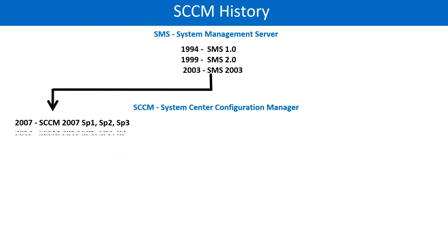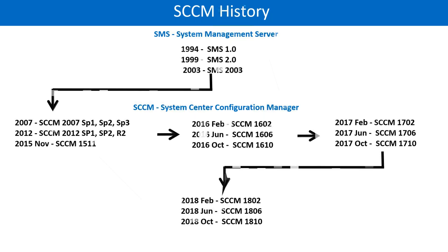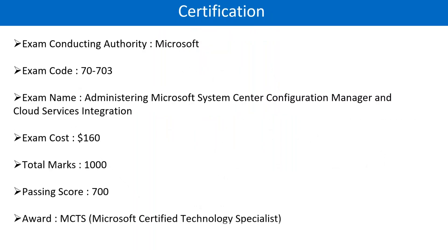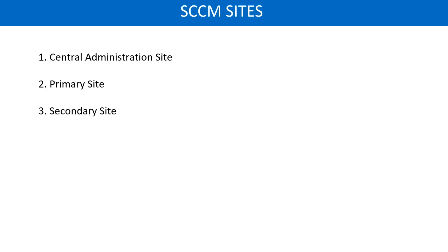In the last session we discussed about the SCCM history details and the versions. Then we talked about the certification in SCCM, the opportunities in SCCM, and the SCCM sites. There are three sites: central administration site which is optional, secondary which is also optional, but primary is a mandatory site.